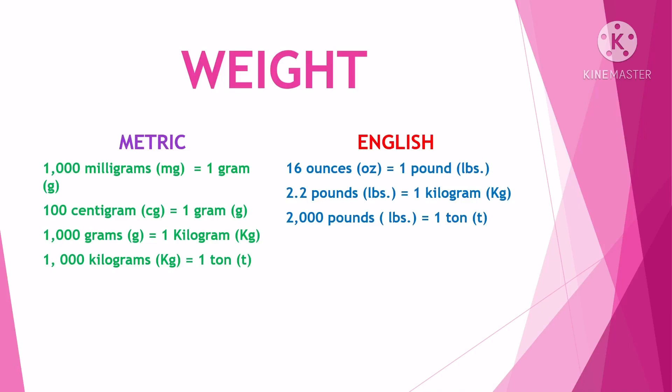For English weight: 16 ounces is equal to one pound, 2.2 pounds is equal to one kilogram, and two thousand pounds is equal to one ton. That's for the weight.